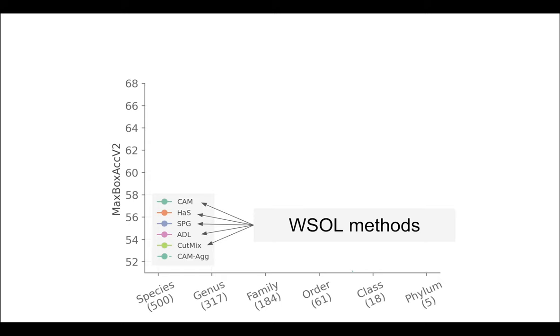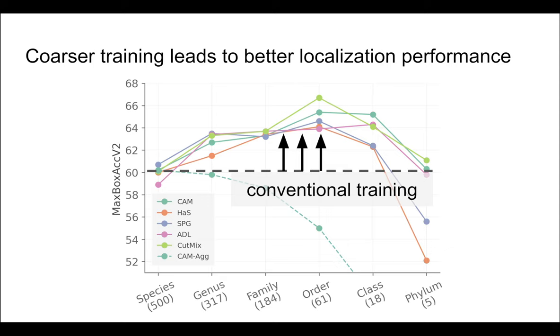We study five different weakly supervised object localization methods. We show that training at an intermediate level of granularity leads to surprisingly large performance gains across methods compared to conventional training. Notice that the choice of label granularity often makes more difference than the choice of algorithm.